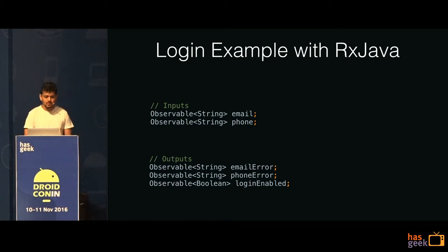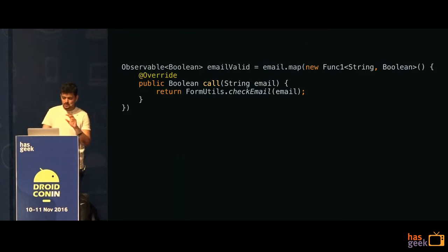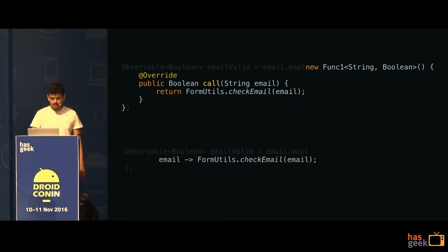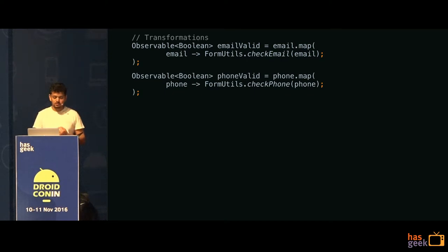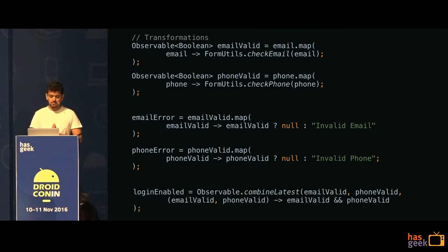Let's see how we can build the login example with RxJava. Again, I have these inputs. Whatever was a string or boolean that was changing, everything becomes an Observable now. We can start writing these transformations. From email, I want to calculate if it's valid or not, so I can use the map operator, passing a function which checks if that email is valid. I can use lambda syntax to make this concise. Similarly, I will do the same for the phone. Then again I can go ahead and calculate my errors from my validities. Lastly, since my login enabled state is dependent on both validities, I can use combineLatest to determine whether login should be enabled or not.